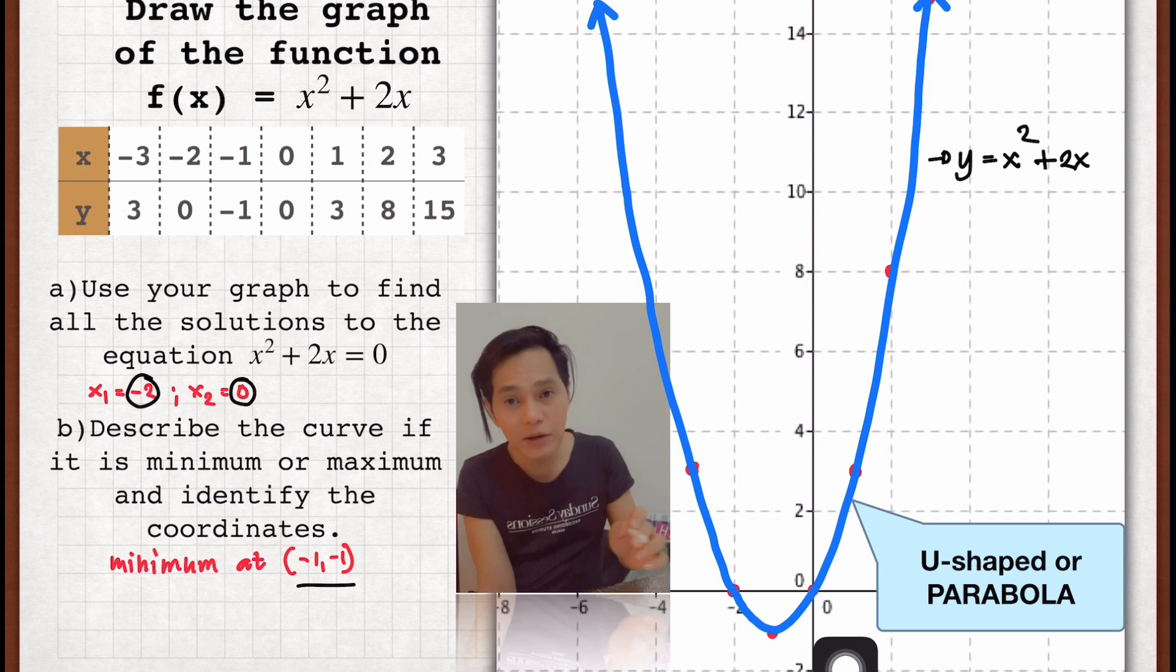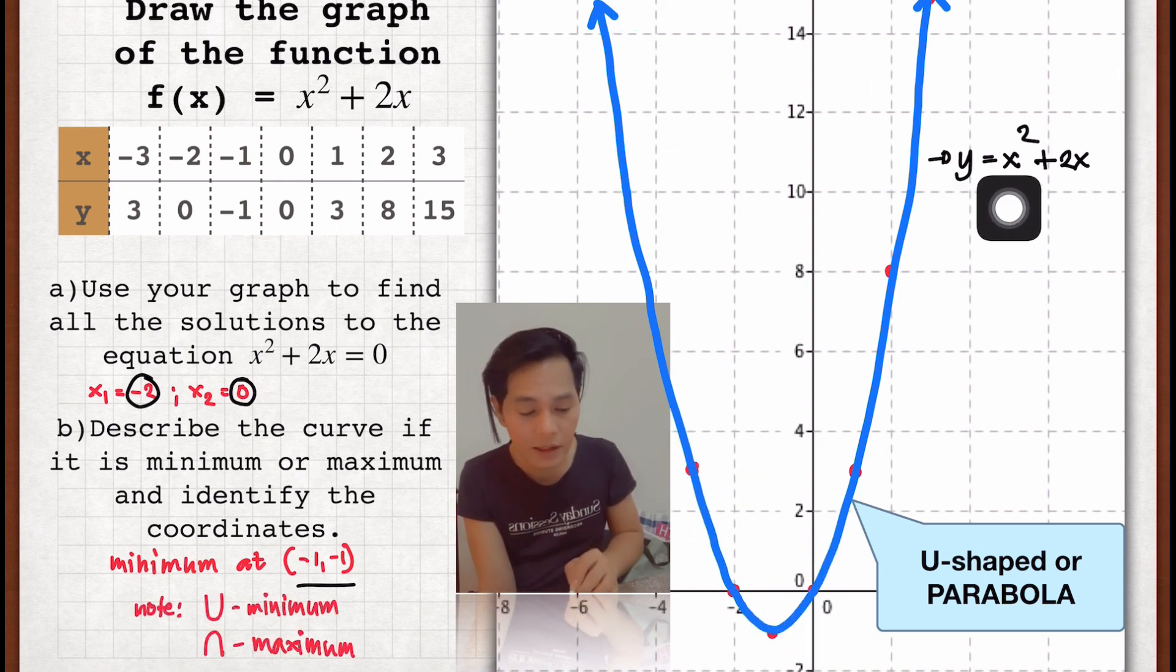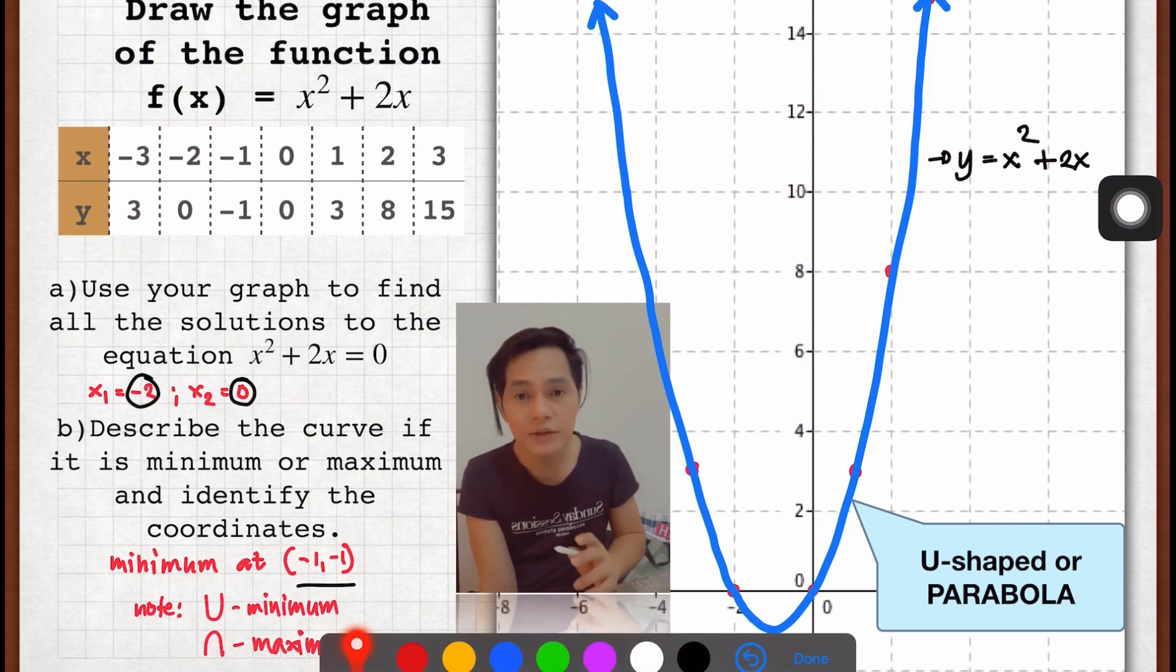Otherwise, take note of this. If it's U-shaped, it's minimum. If it's inverted U, then it's maximum. So that's how you do that.